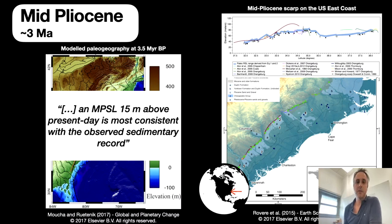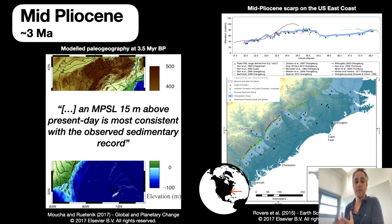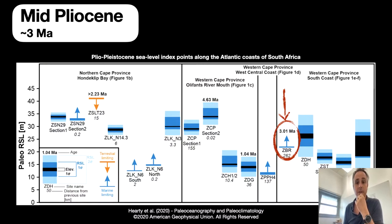This aligns with what we found on the US East Coast, work I did as a postdoc with Maureen Raymo at Lamont. By correcting for dynamic topography, Mucha Rutnik found that sea level must have been about 15 meters above present — lower than the early Pliocene, but still quite high above the 10–15 meter mark. There are also quite a lot of sea level records in South Africa for the mid-Pliocene shoreline at around 3 million years.